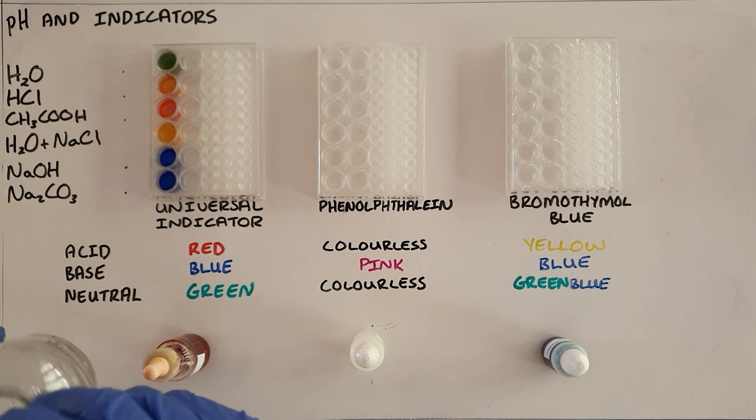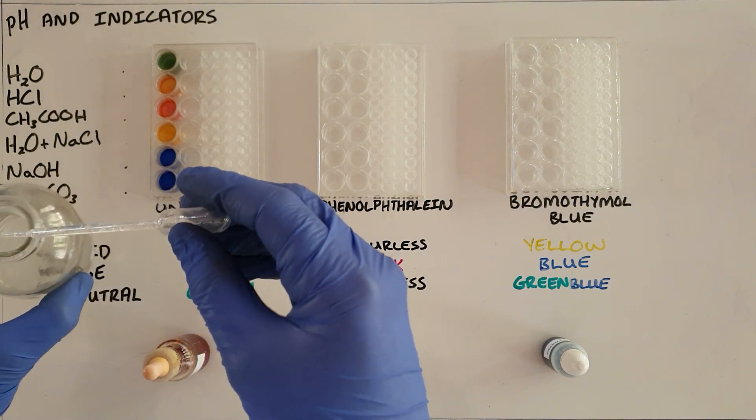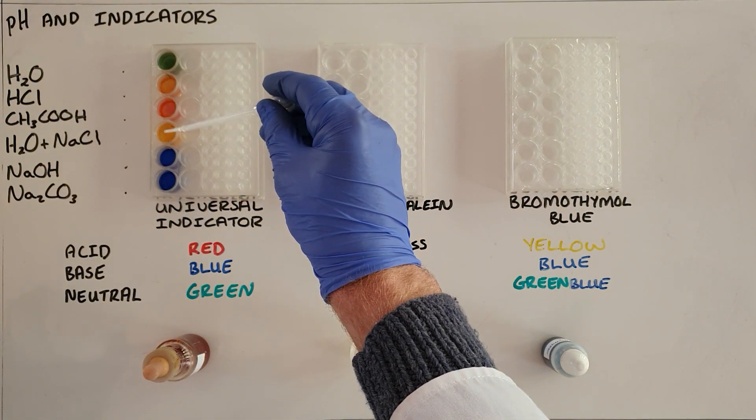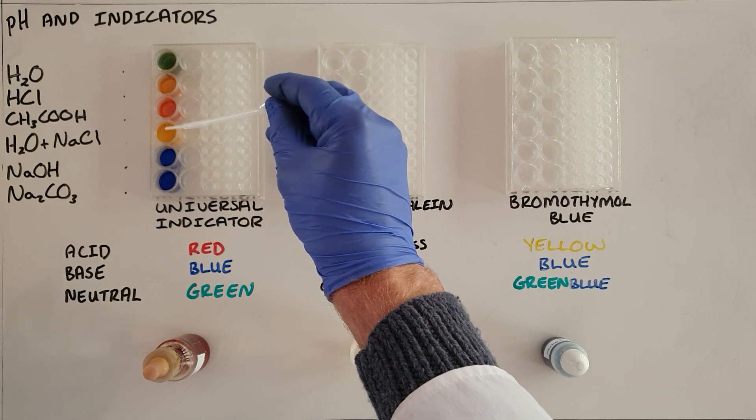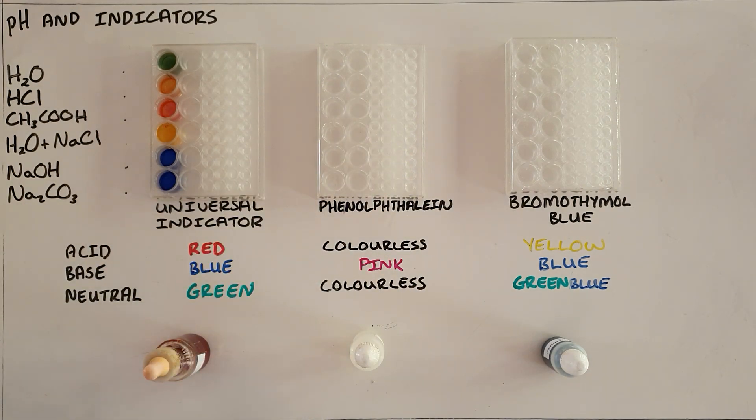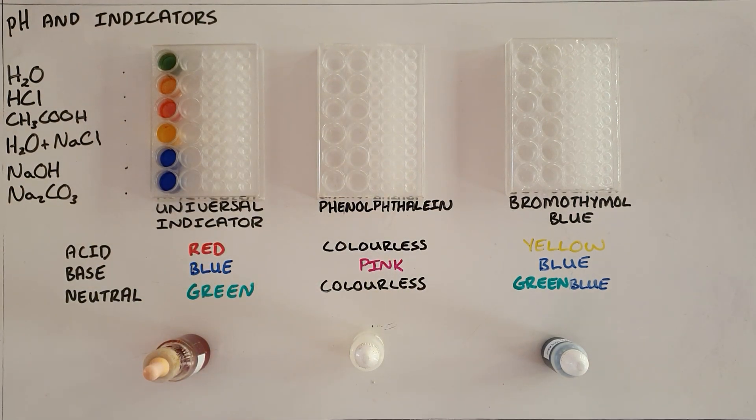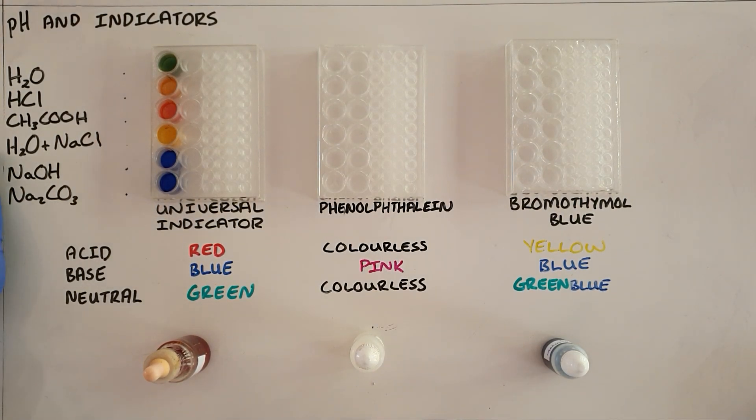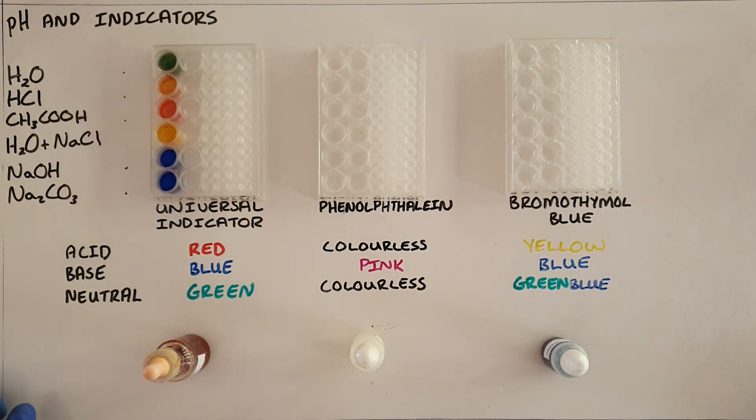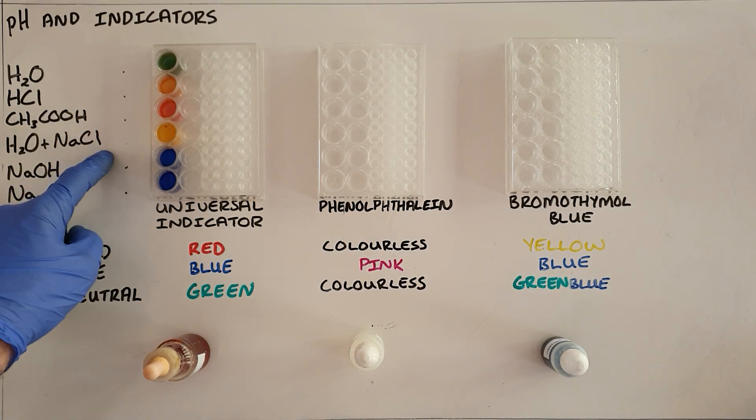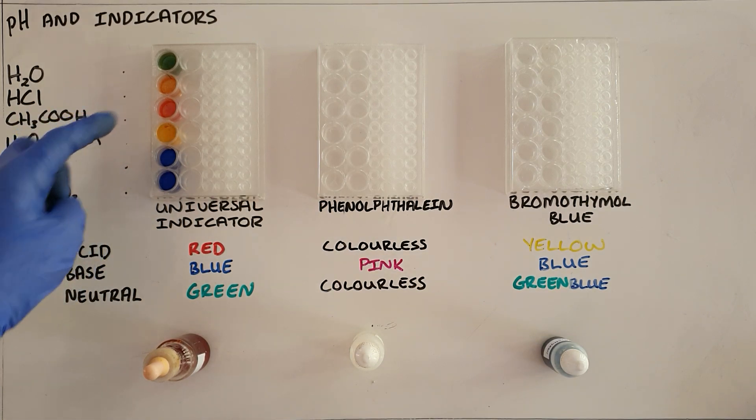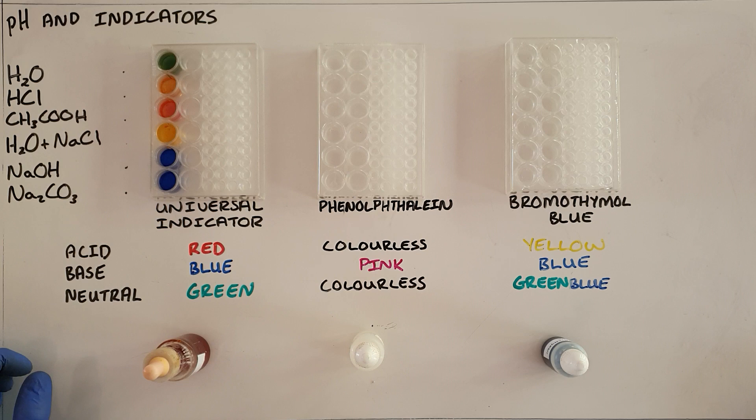And then as expected our hydrochloric acid and acetic acid CH3COOH are acids. As we can see here our H2O and NaCl has gone slightly yellow which is possibly just some contamination from the previous acid that we had there because we know that that is a neutral solution.